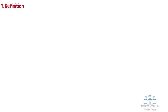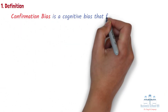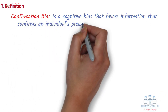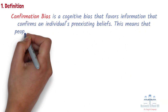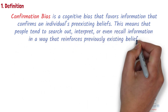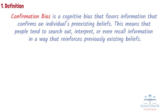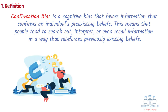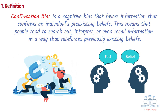Section 1: Definition. Confirmation bias is a cognitive bias that favors information that confirms an individual's pre-existing beliefs. This means that people tend to search out, interpret, or even recall information in a way that reinforces previously existing beliefs. For example, consumers who like or dislike a particular brand will not only seek information to support it, but will also interpret the brand's stories and product messages in a way that maintains their existing beliefs. Consumers will also remember details that reinforce these attitudes. Once an attitude is formed strongly, consumers tend to embrace information confirming that attitude while ignoring or rejecting that information without further critical thoughts.